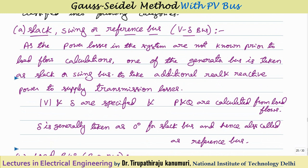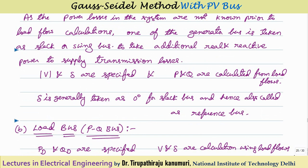Based on which quantities are specified, buses are broadly classified into the following categories. The first is called the slack bus, swing bus, or reference bus. One bus is taken as the slack or reference bus for making all calculations. The main reason is that power losses in the system are not known prior to load flow calculations, so one generator bus is taken as slack to supply the additional real and reactive power for transmission losses. For the slack bus, voltage magnitude and delta (taken as zero) are specified; P and Q can be any values.